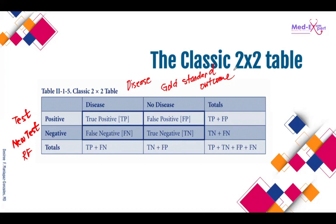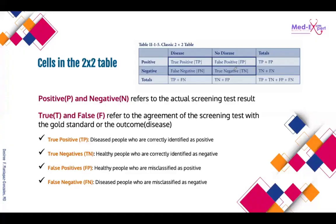The cells in a two-by-two table: on the left side you only have positive and negative — the actual screening test results. On the top you see true and false. True means the person has the disease; false means the person has no disease. True positive means the person has a disease and is tested positive. True negative means healthy individuals correctly identified as negative. False positives are healthy individuals misclassified as positive, and false negatives are diseased people misclassified as negative.